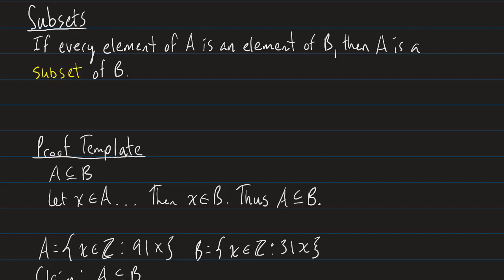The word subset is pretty self-explanatory, but I've written out a little definition anyway. If every element of some set A is an element of B, then A is a subset of B. We write this using a horseshoe symbol with a horizontal line under it: A ⊆ B. One thing to note is that a set is always a subset of itself — A ⊆ A — because every element of A is trivially an element of A.